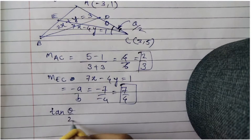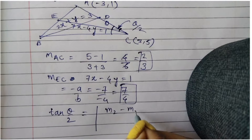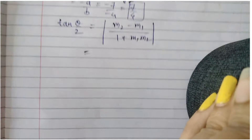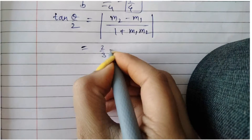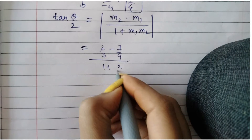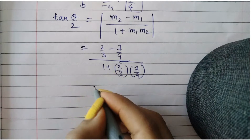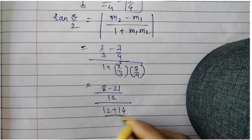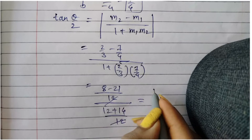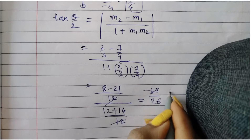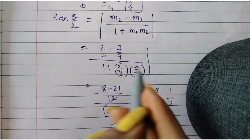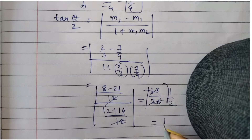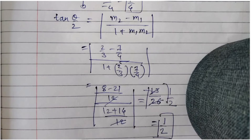Let us find tan(θ/2) using the formula: (m₂ - m₁)/(1 + m₁·m₂). So (2/3 - 7/4)/(1 + (2/3)(7/4)) = (8 - 21)/12 ÷ (12 + 14)/12. The 12s cancel, giving -13/26 = 1/2. Taking the modulus, tan(θ/2) = 1/2.